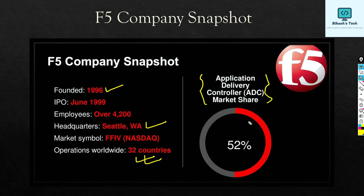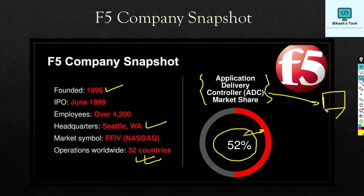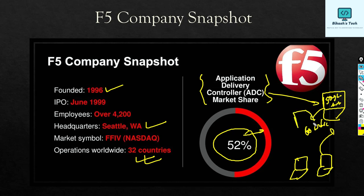The ADC market share is 52%. In layman's terms, ADC works like this: let's say you are Google and you have a web server that is publicly hosted, and users from around the world are accessing those Google servers. An ADC device manages this by load balancing, doing DNS, and all those things — basically controlling the traffic of users. That's the meaning of Application Delivery Controller, and F5 holds 52% of that world market, meaning half of the world's traffic is managed by F5 itself.